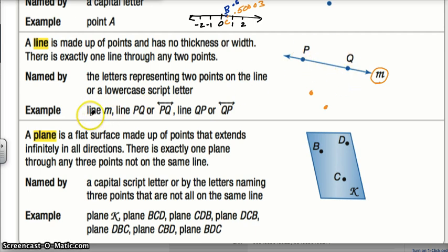You can name a line, line m, as in the lowercase letter, or line PQ, or line QP, depending on the two points that are on the line. Order doesn't matter. What you also want to notice is that you can symbolically represent a line by talking about two points on it and using the line symbol at the top. Notice the arrows on either side.